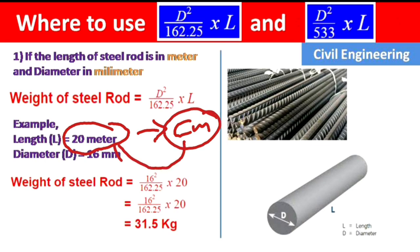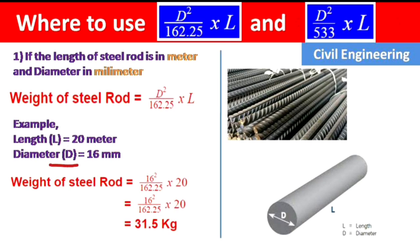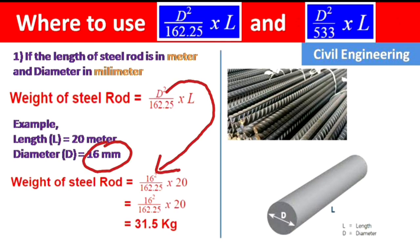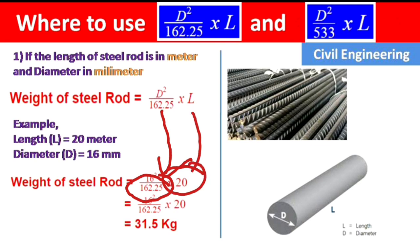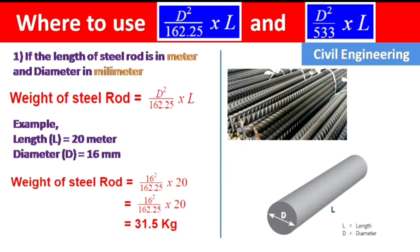If the length is in centimeters, convert it to meters — one meter equals 100 centimeters. Here the length is already 20 meters, so we use it directly. Diameter is 16 mm. Weight of steel rod = d² / 162.25 × L = 16² / 162.25 × 20 = 31.5 kg. The unit is always in kilograms.